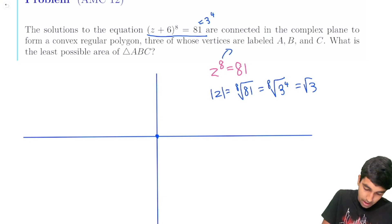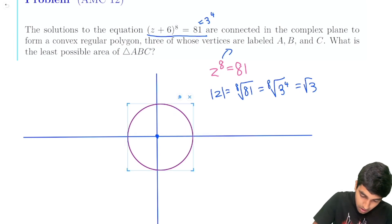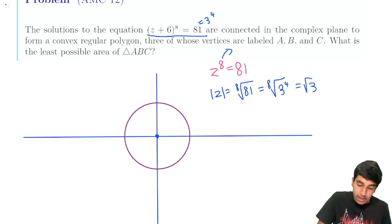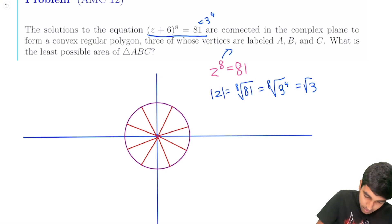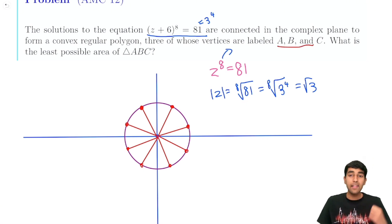So let's just draw out what our octagon would look like here. And since the magnitudes are square root of 3, we can imagine a circle. Let's imagine a circle of radius square root of 3. So this circle will have a radius of square root of 3, and we can imagine an octagon inscribed in it. These 8 points will form an octagon, and the magnitude of each of these points is square root of 3. And we're asked to find 3 of these points. So we need to find 3 of these vertices, and the least possible area of the triangle.